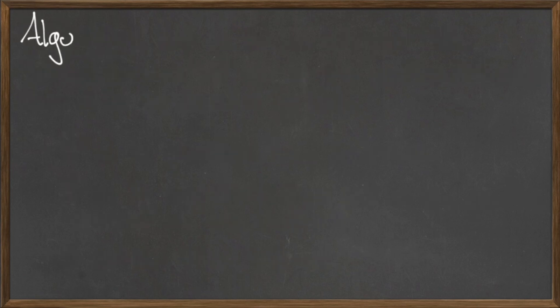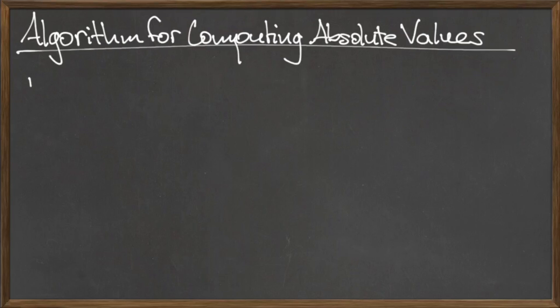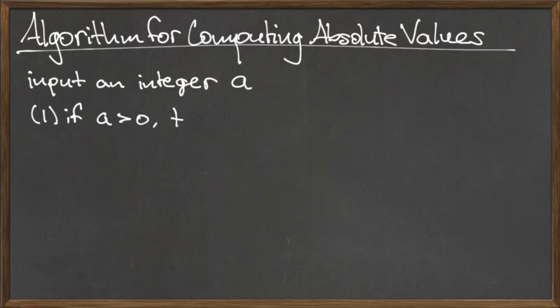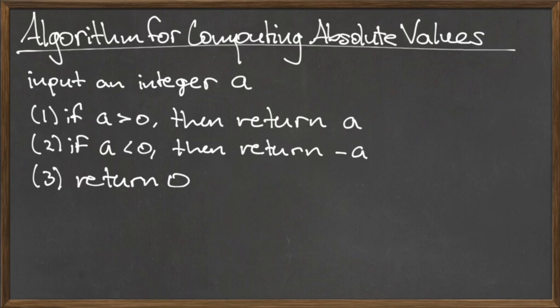Using this definition, we can construct an algorithm for computing absolute value. The input for this algorithm is an integer a, and the steps consist of three conditional statements. If a is greater than zero, then return a. If a is less than zero, then return negative a. And finally, if a is equal to zero, then return zero.